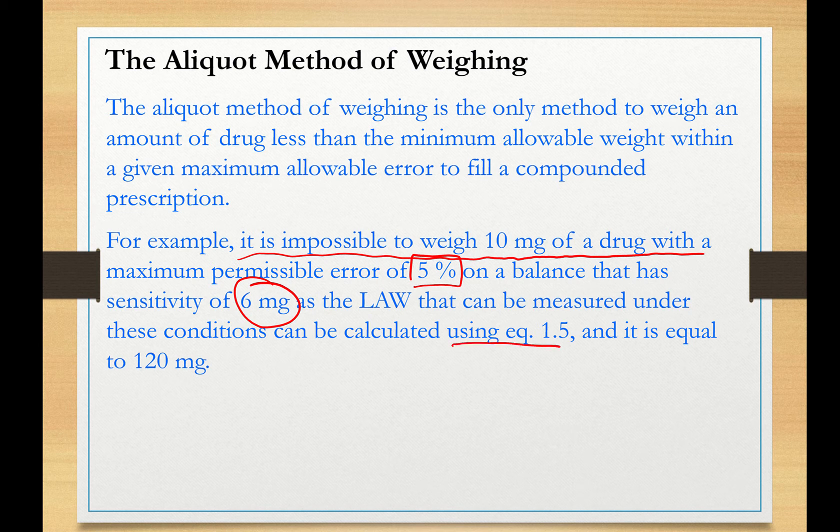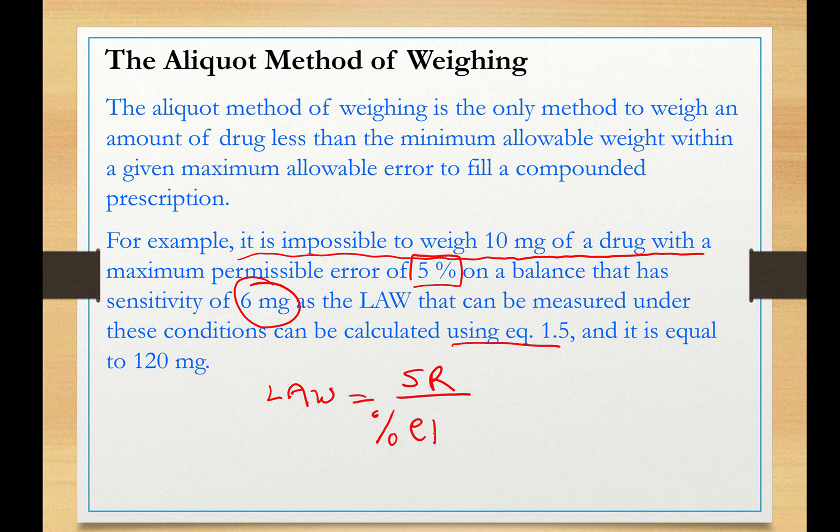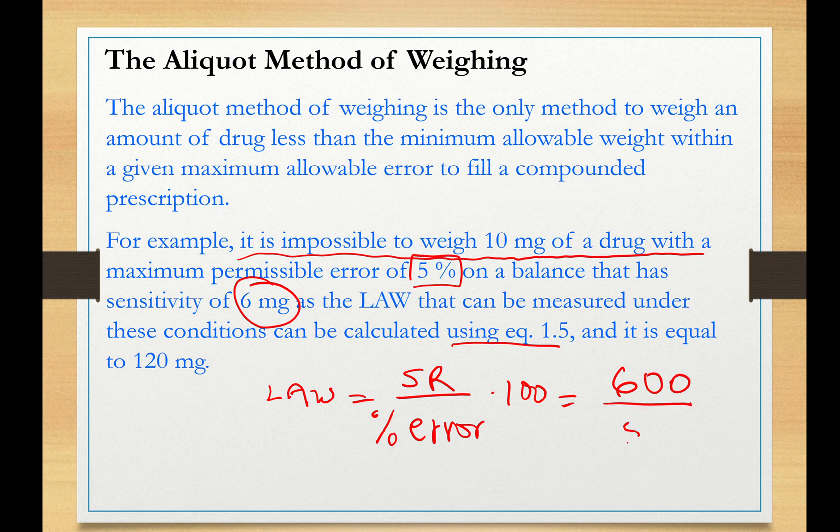We can calculate the least level weight using equation 1.5. So the least level weight equals the SR over the percent error times 100. So this is 6 times 100, so 600, over 5 and this is 120 milligrams. If you attempt to weigh directly 10 milligrams of a drug on a balance, you will exceed a lot the 5% maximum level error.